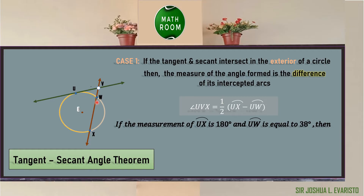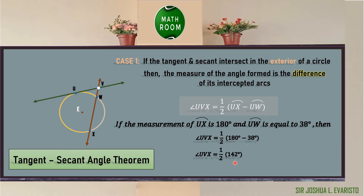For example, if arc UX is 180 degrees and arc UW is 38 degrees, we solve angle UVX by substitution: angle UVX = one-half of (180° − 38°) = one-half of 142° = 71 degrees. Therefore, angle UVX is equal to 71 degrees.